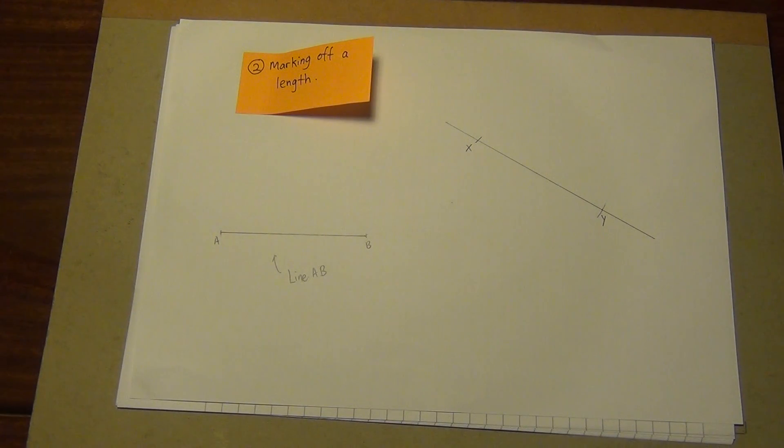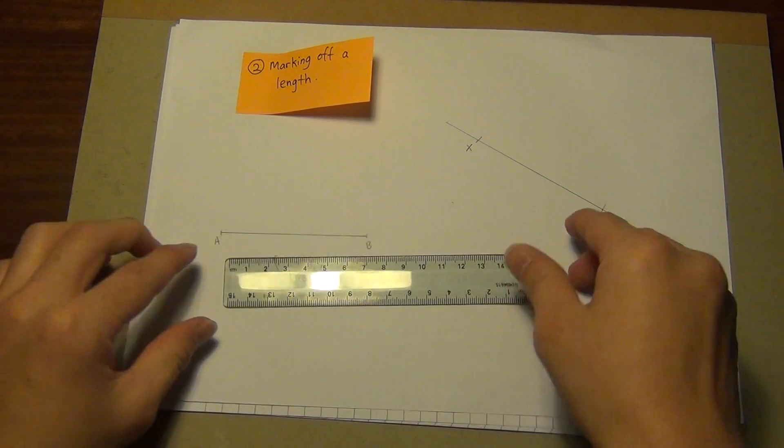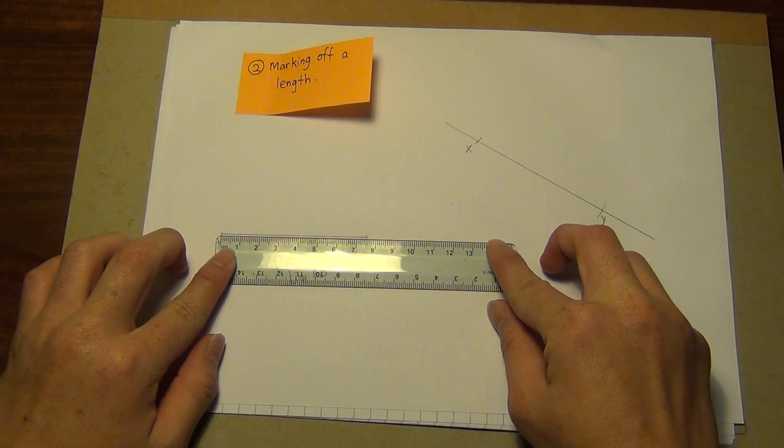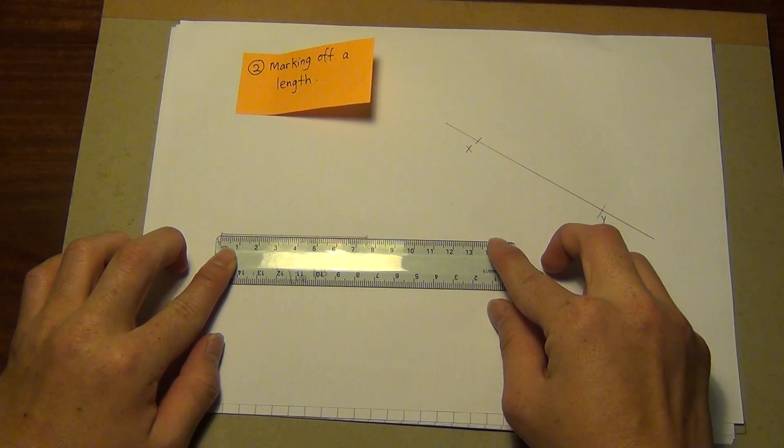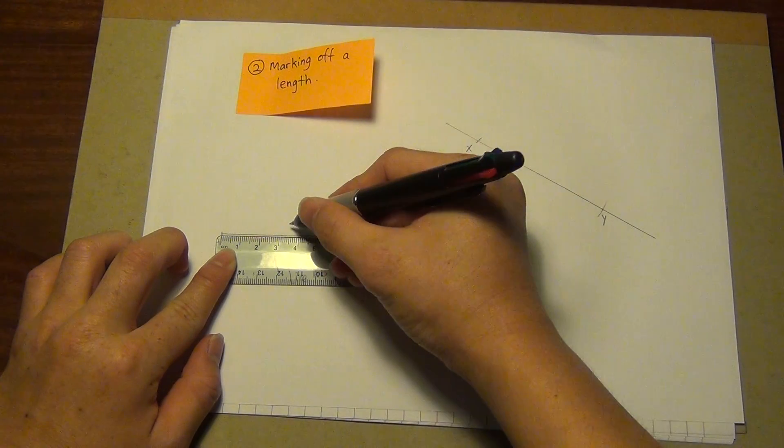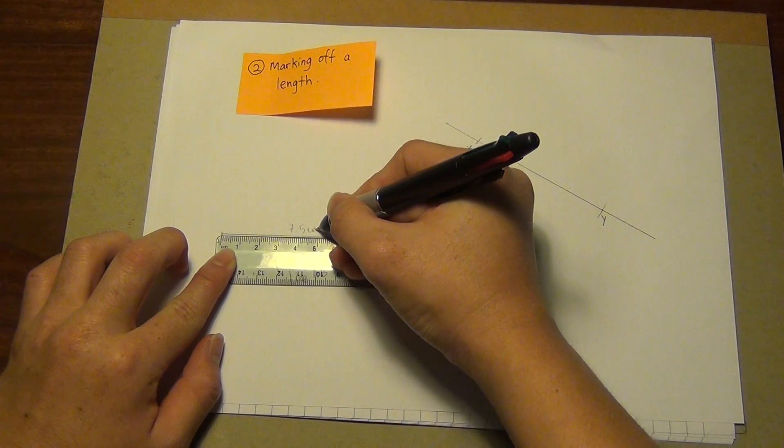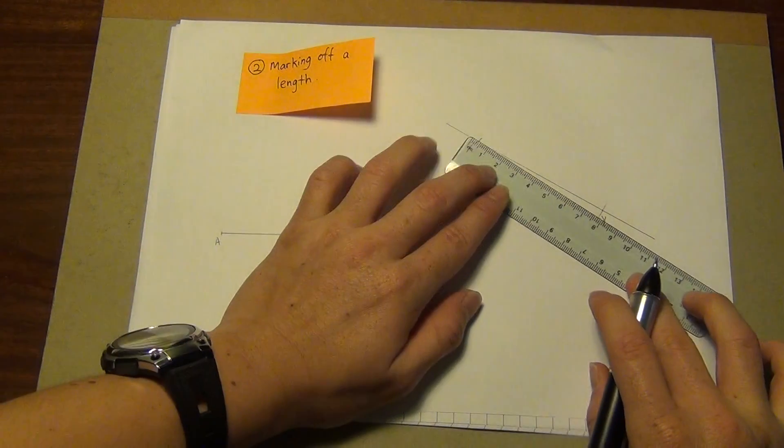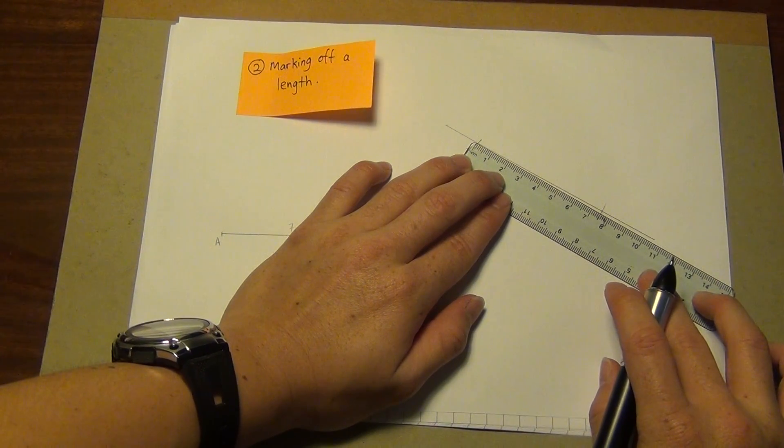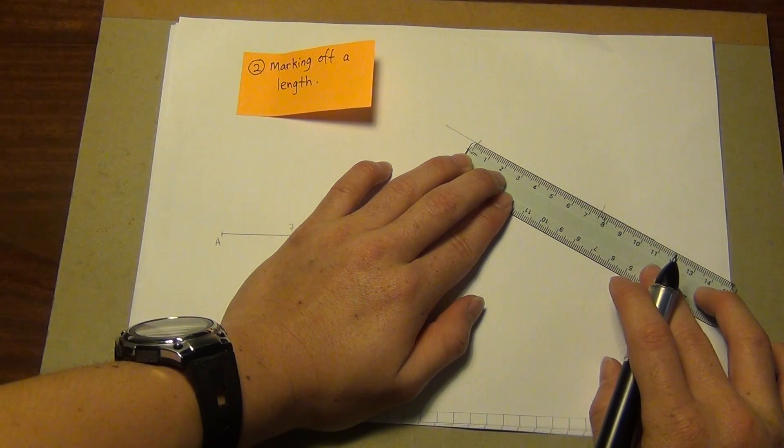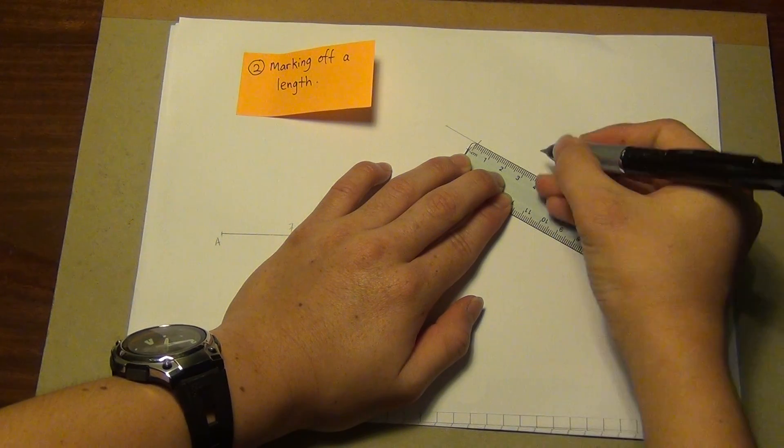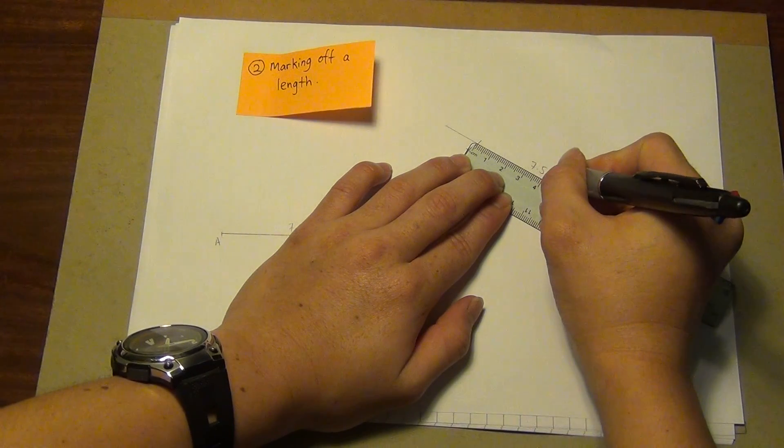To confirm whether we did it correctly and accurately, I'll use a ruler and measure. Over here I measure that this is 7.5cm using a ruler. To make sure I'm accurate, I'll take the intersection point here and the intersection point which I just marked off, which is the same as 7.5cm.